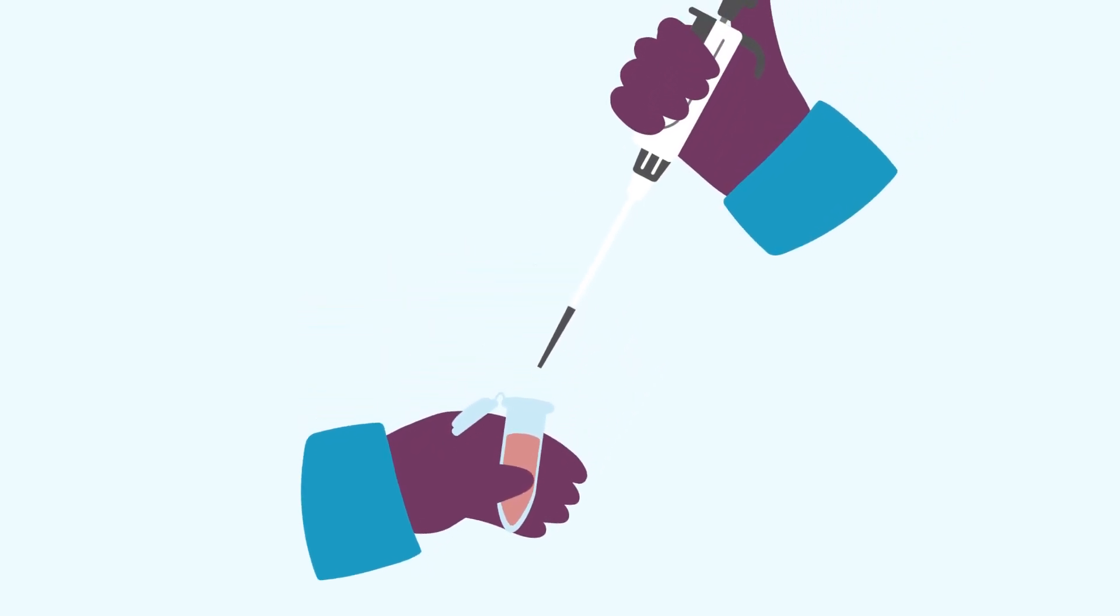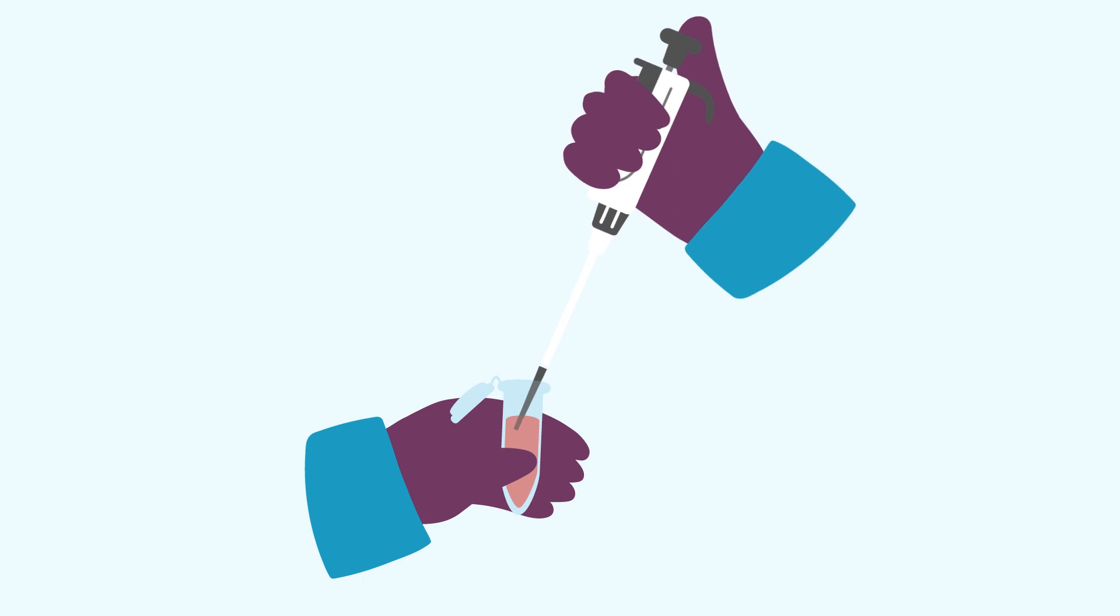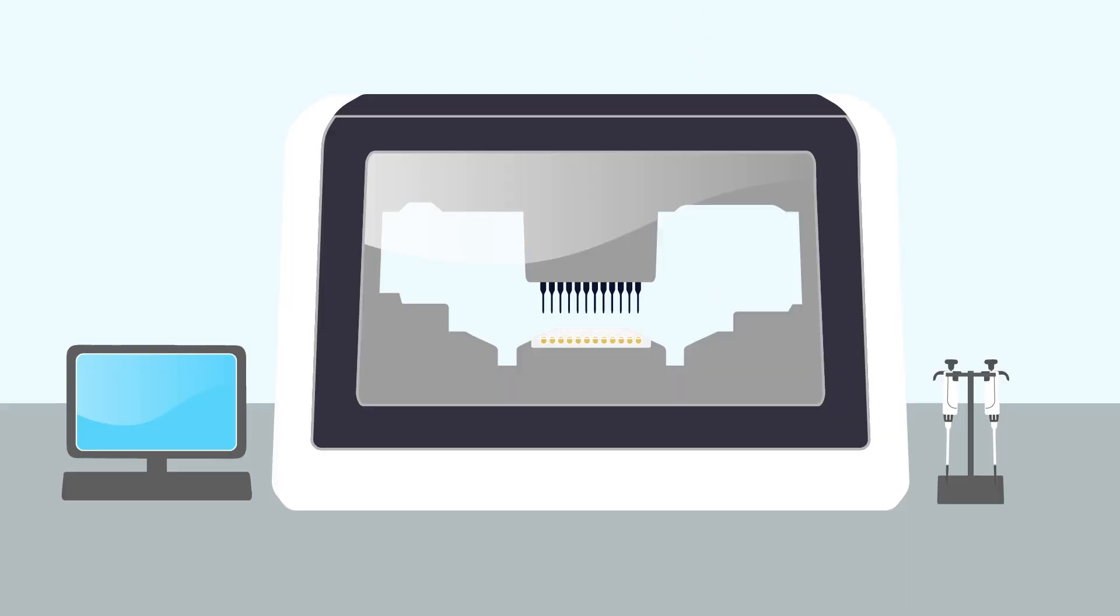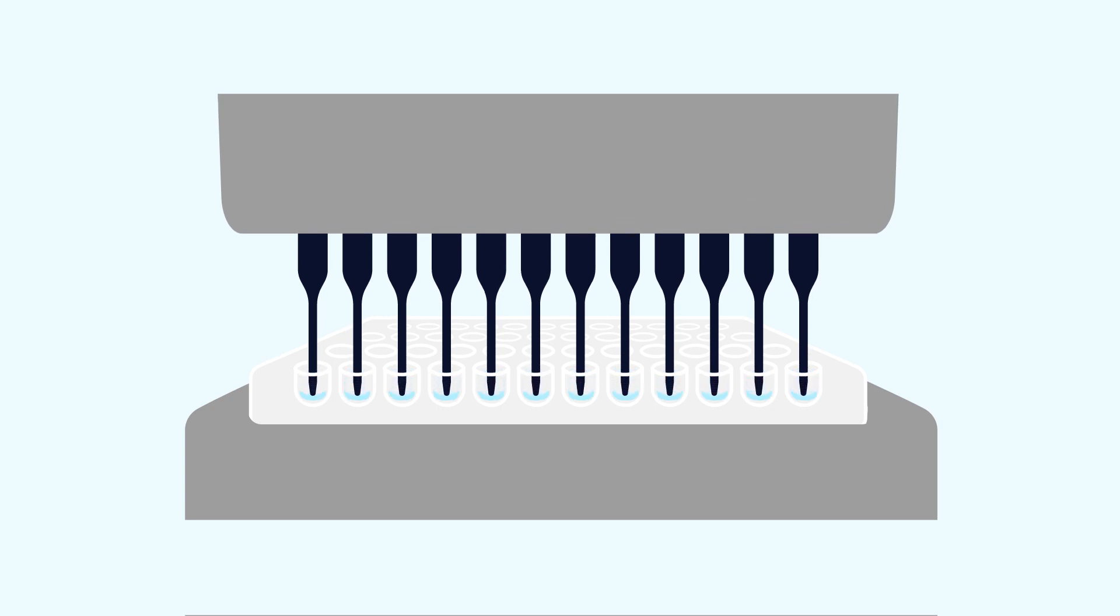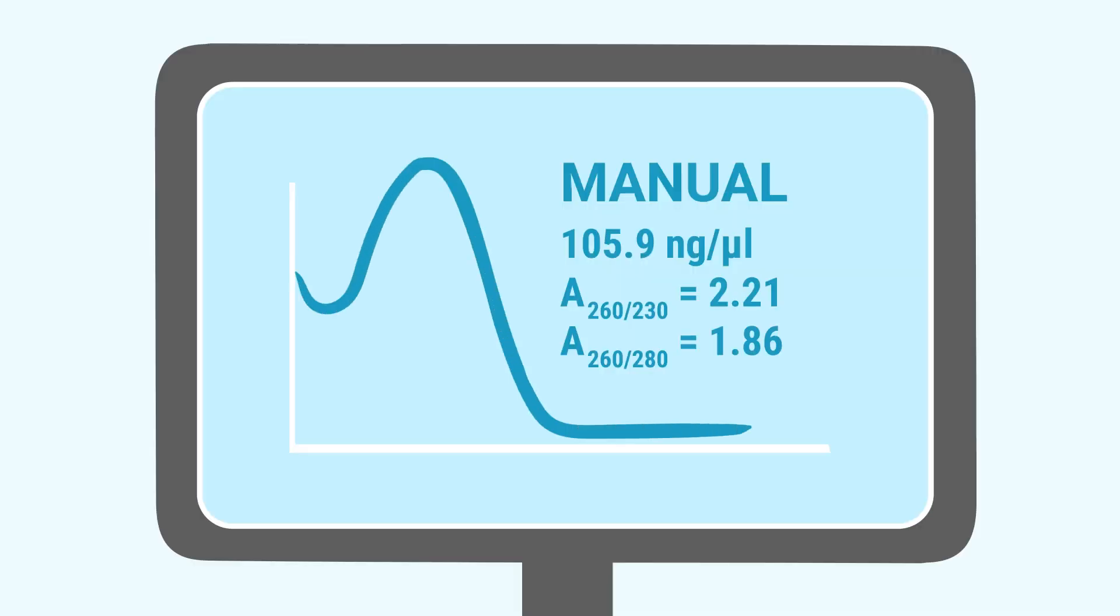Before working with a robot, you must develop a manual extraction method that meets and exceeds your requirements. An automated extraction may be more consistent and have higher throughput, but final yields and purity will rarely be better than what you can achieve manually.